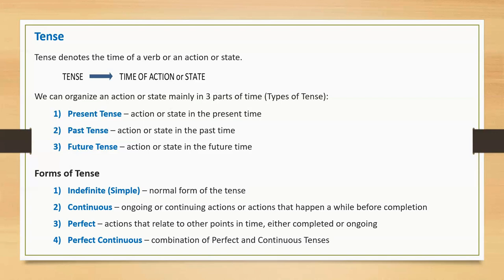The normal form of the tense is considered as indefinite tense. Ongoing or continuing actions, or actions that happen a while before completion, are known as continuous, also known as progressive tense. Actions that relate to other points in time, either completed or ongoing, are called perfect tense. The combination of perfect and continuous tenses is called perfect continuous.